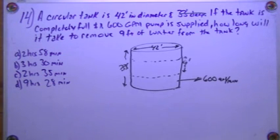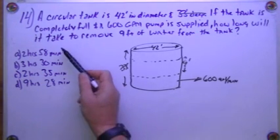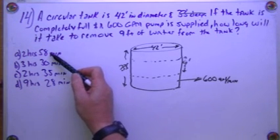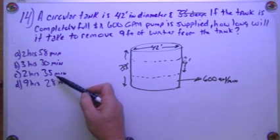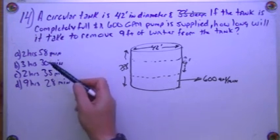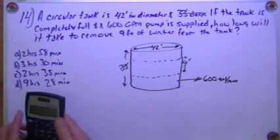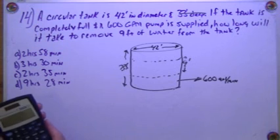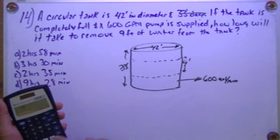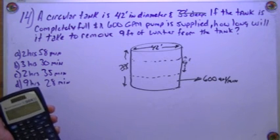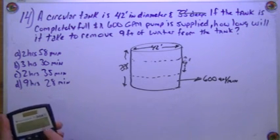So all of the water being removed is going to contribute to lowering the level. Now the other thing I mentioned earlier is we come back and take a look at these answers. 2 hours 58 minutes, 2 hours 35 minutes. What if this was 0.58 hours? Let's take a look. 0.58 times 60 is 34.8, or 35.